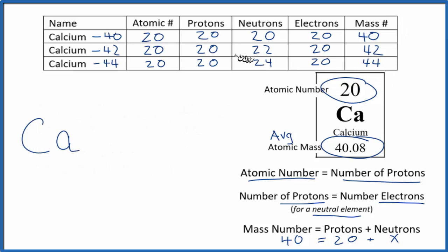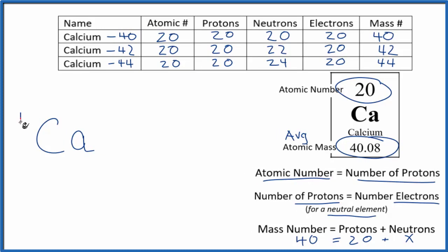There's a special notation called nuclear notation, where we can write the notation for each isotope. For example, here's calcium. We put 40 for the mass number, and then the number of protons, 20, we put down here.